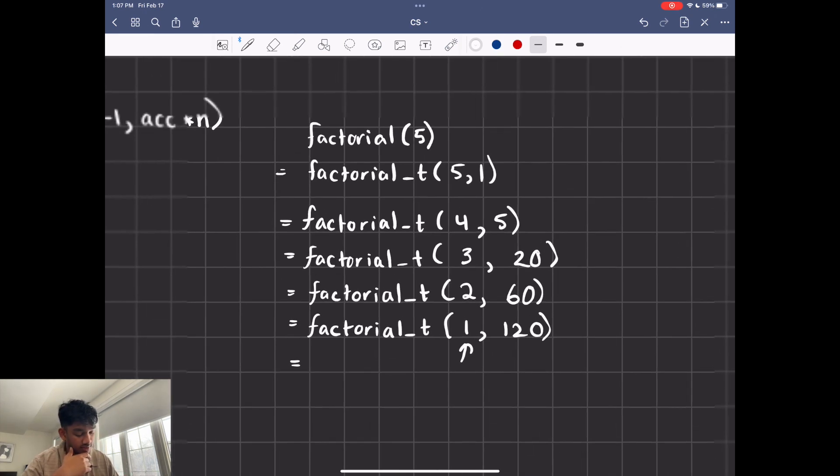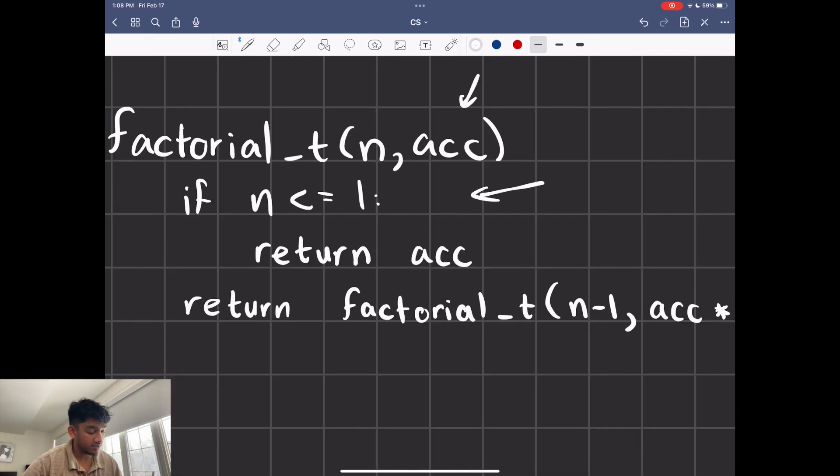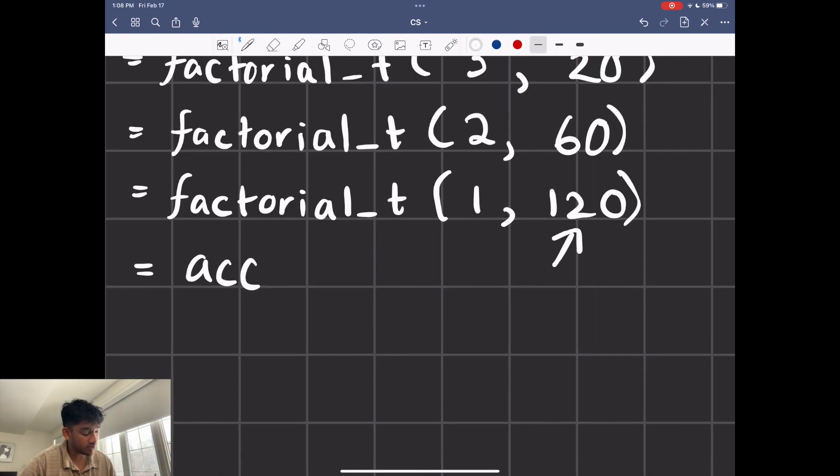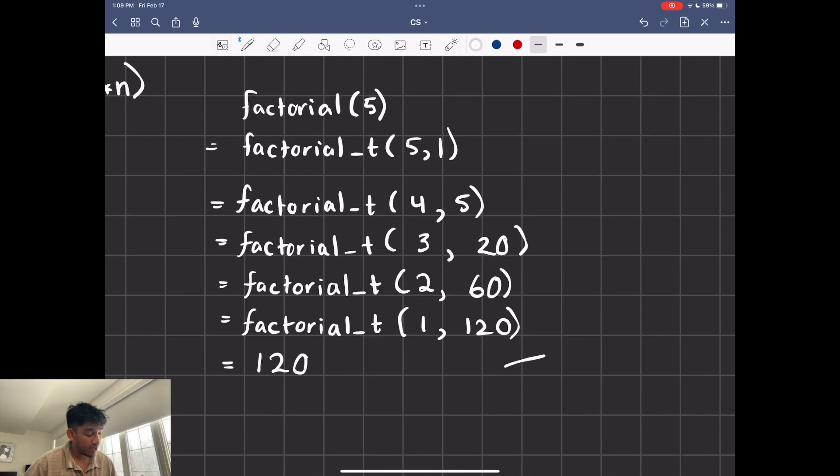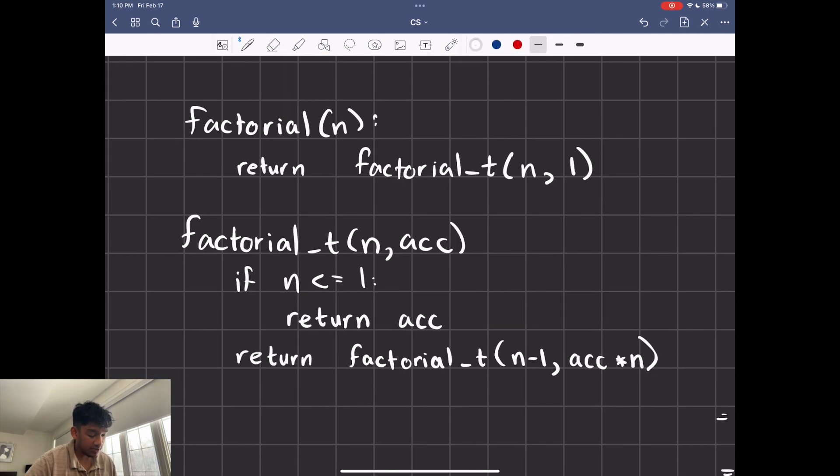And since n is 1, we said that if n is less than or equal to 1, we return the accumulator now. So our accumulator is just going to be 120. So we return 120. And we can return 120 without having to multiply anything else because everything's been multiplied by the accumulator, just like that. And that's how you do a tail recursion.